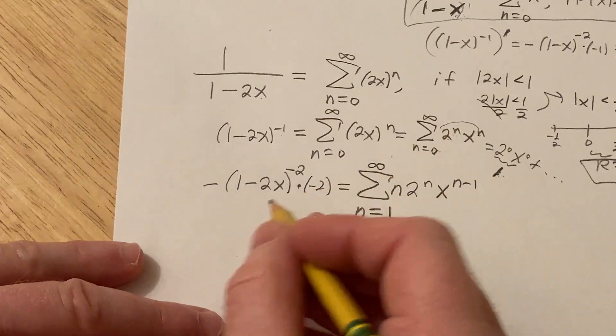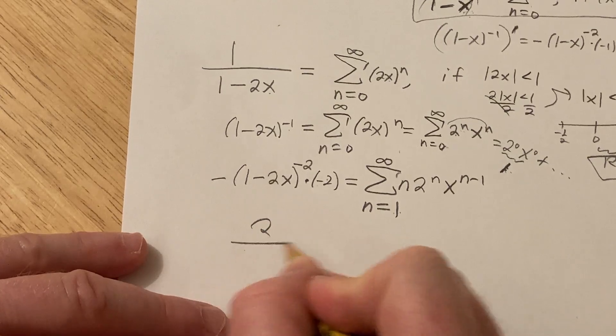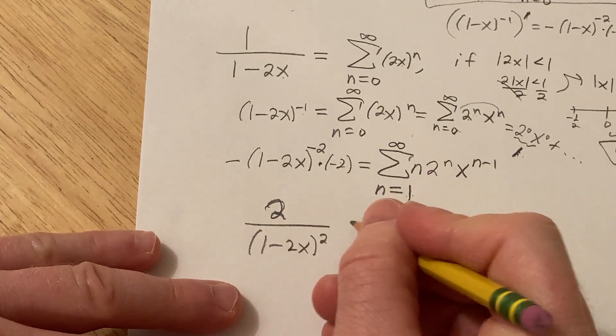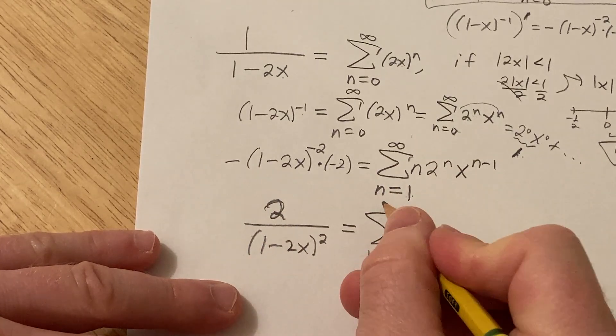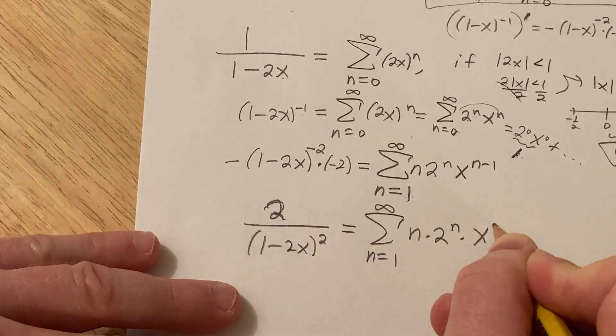Okay. So now let's clean this up. This is going to be 2 over 1 minus 2x squared equal to the infinite sum, as n runs from 1 to infinity of n times 2 to the n times x to the n minus 1. I love these problems.